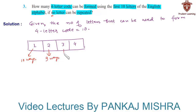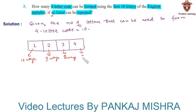Similarly, the third letter of the code can be occupied by the remaining 8 letters in 8 different ways, and finally the fourth letter of the code can be occupied by the remaining 7 letters in 7 different ways.